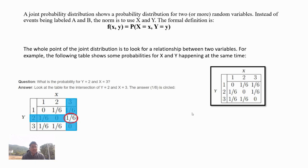A joint probability distribution shows a probability distribution for two or more random variables. Instead of events being labeled A and B, the norm is to use X and Y. You can see the formal definition: f(X, Y) = P(X = x, Y = y).